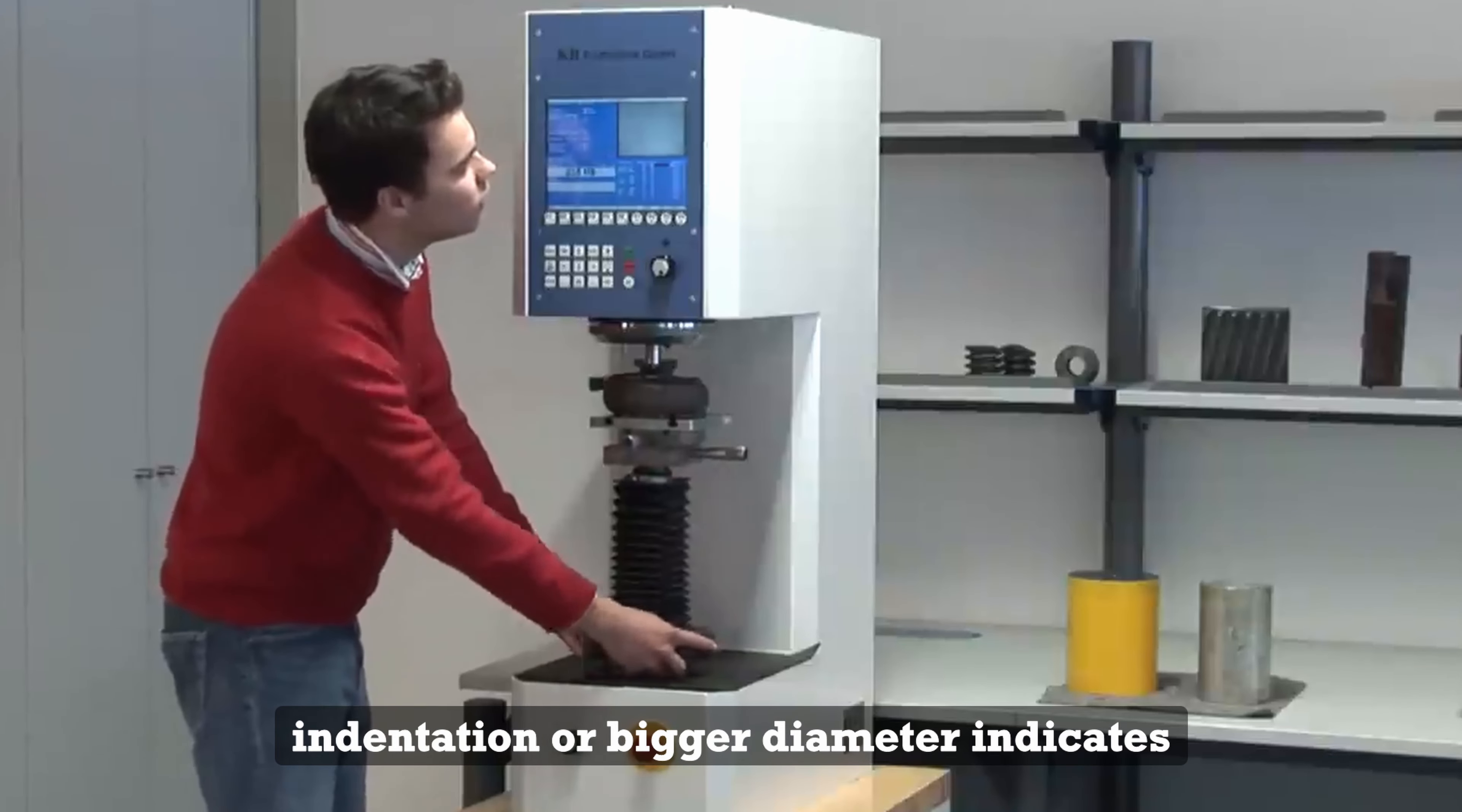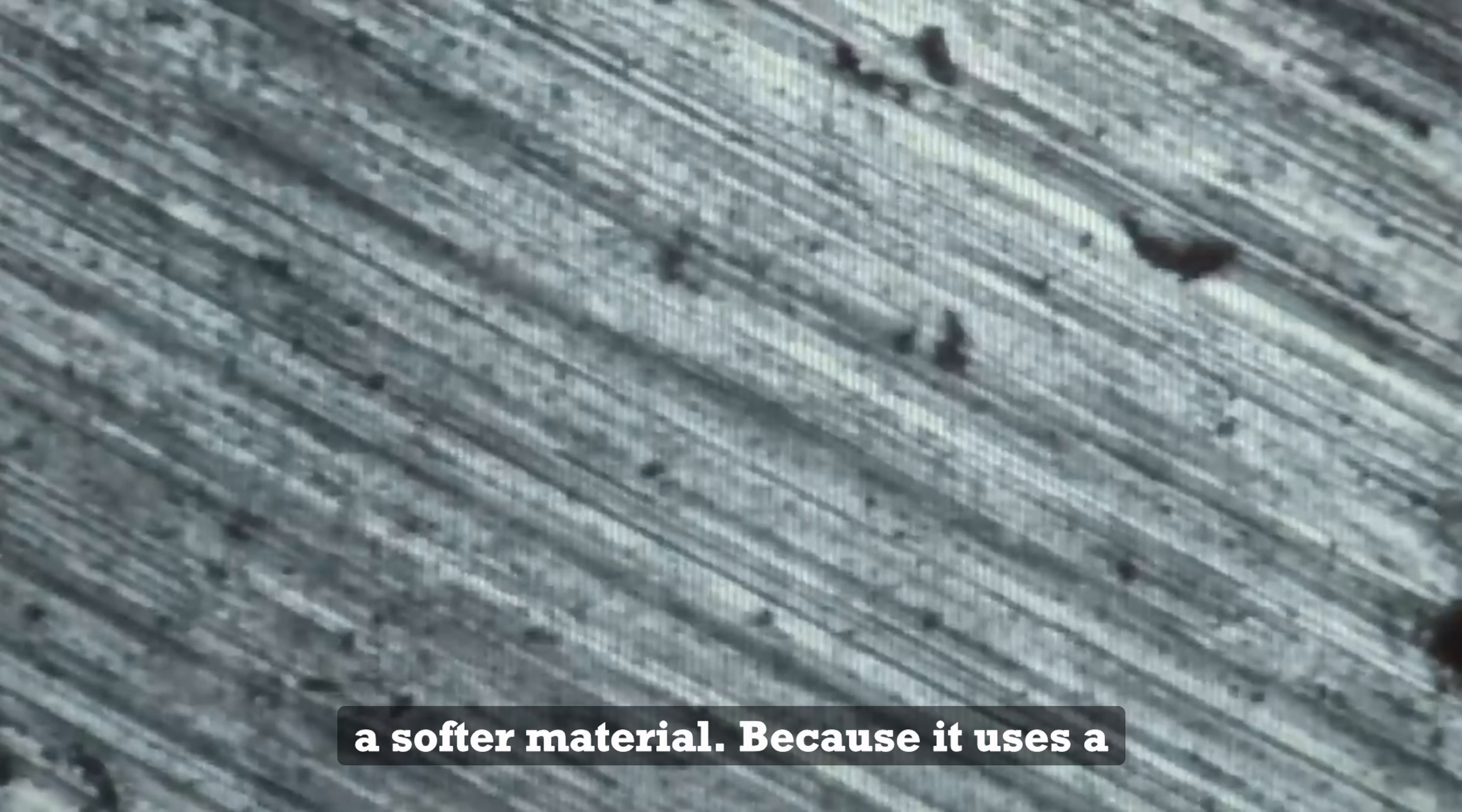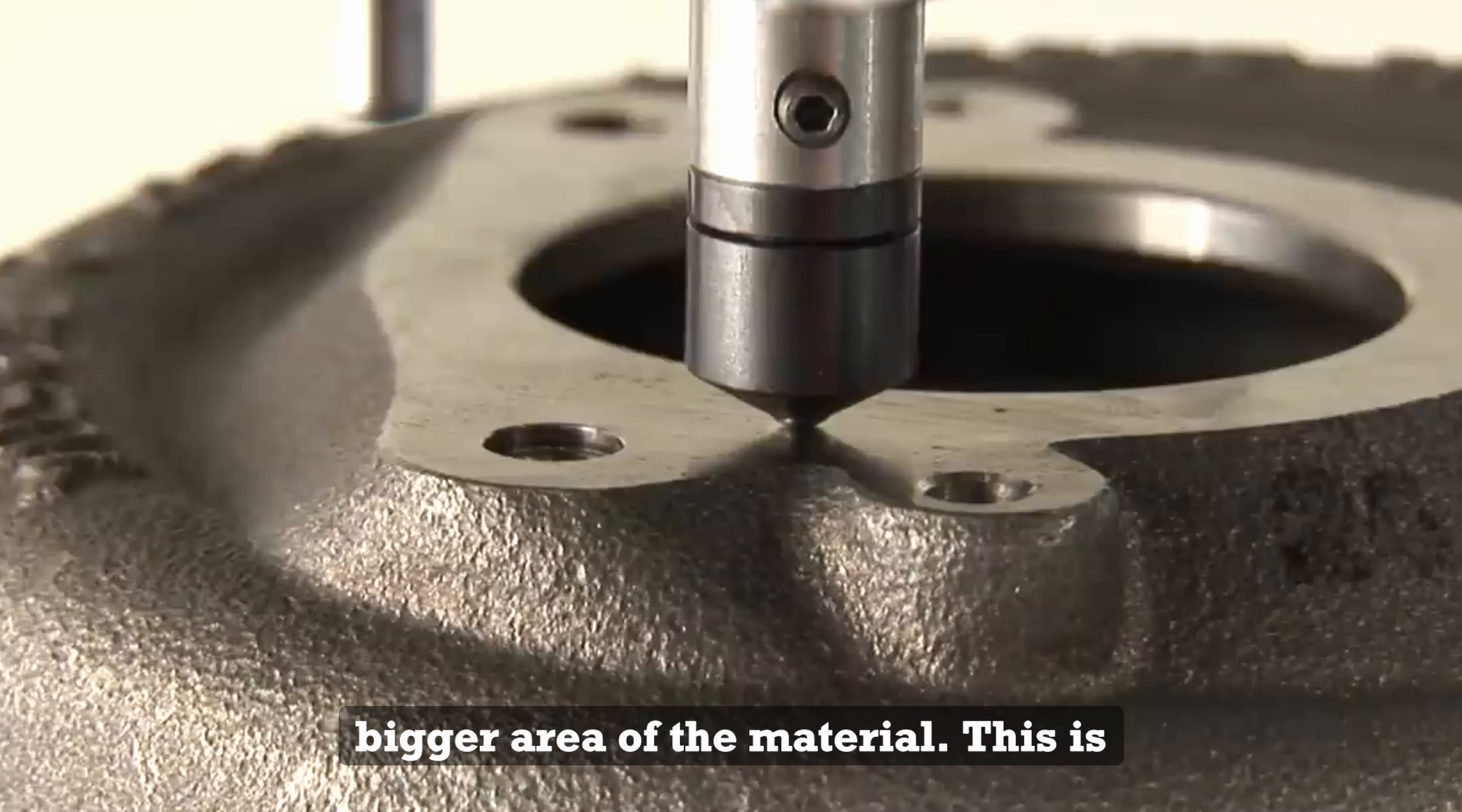A larger indentation or bigger diameter indicates a softer material. Because it uses a larger indentation compared to Rockwell, it provides an average hardness across a bigger area of the material.